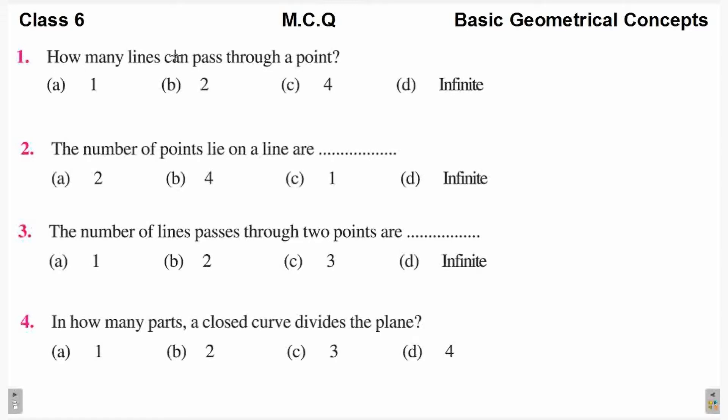First is, how many lines can pass through a point? Now, there is a point here. We can pass infinite number of lines through this point. So the answer to the first question will be D. We can pass infinite number of lines through a point.